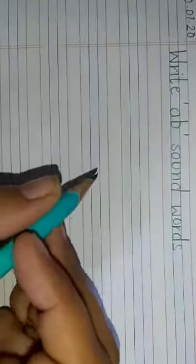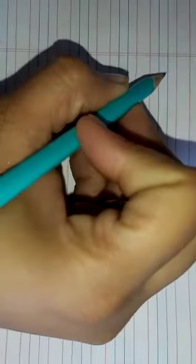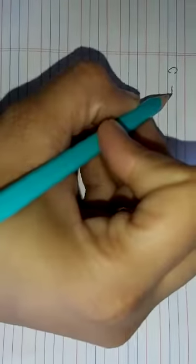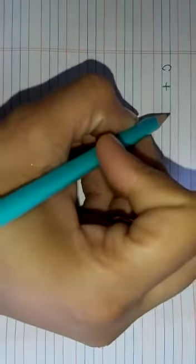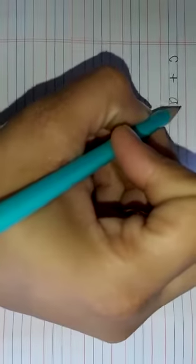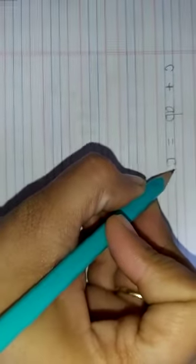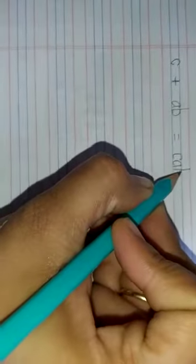Firstly, the first word we just studied was cab. So we will write down C plus AB. What does this become? CAB, cab. So we are going to write down cab. Right?